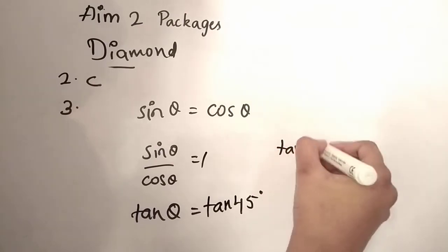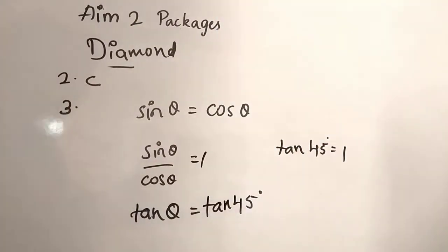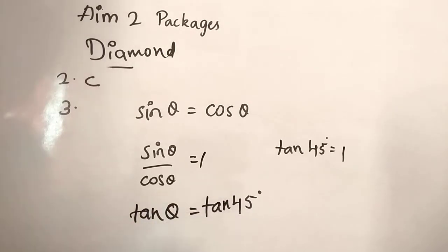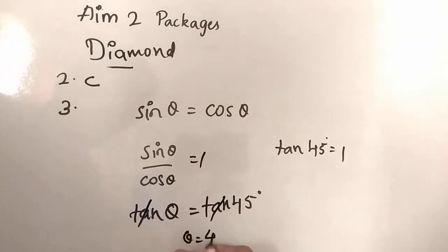Tan 45 is 1. You should remember this value. Okay? Now, theta will be here. Right? So, if I send this tan to RHS, tan tan will get cancelled. So, directly I cancelled it. And, theta value is 45 degree.